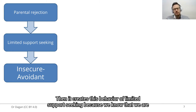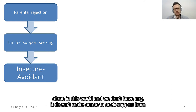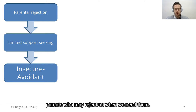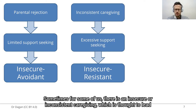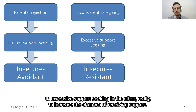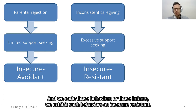This creates a behavior of limited support seeking, because we know that we are alone in this world and it doesn't make sense to seek support from parents who may reject us when we need them. We code those infants and children as insecure avoidant. Sometimes there is insecure or inconsistent caregiving, which is thought to lead to excessive support seeking in the effort to increase the chances of receiving support. We code those infants who exhibit such behaviors as insecure resistant.